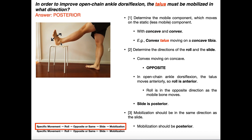The ankle joint is called the tibiotalar joint because it's a joint between the tibia and the talus, which is one of our tarsal bones in the foot. So we're either going to have to mobilize the tibia or the talus. Because the foot is more mobile in open chain, the talus is the mobile bone — which is why we're going to mobilize the talus. The tibia is the more static or less mobile component.